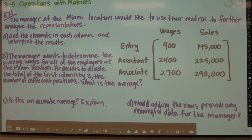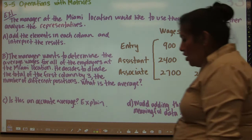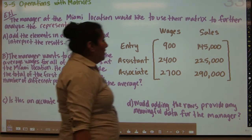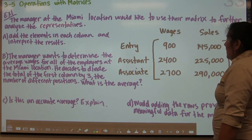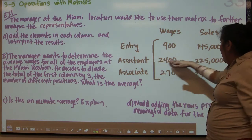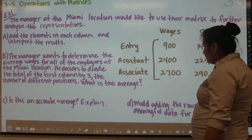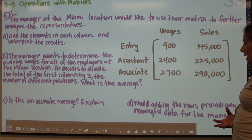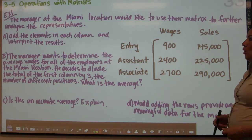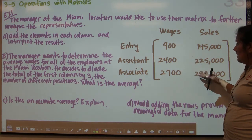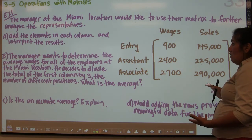We did this a little bit in Algebra 1, so I just wanted to refresh your memory. A matrix is basically a way to organize data. Everything inside the matrix is considered an element — this matrix has six elements. There are rows, which go across, and columns, which go down. Rows are horizontal and columns are vertical. Every matrix has dimensions, like length and width, but you always name them row by column. So a matrix with three rows and two columns has dimensions three by two.